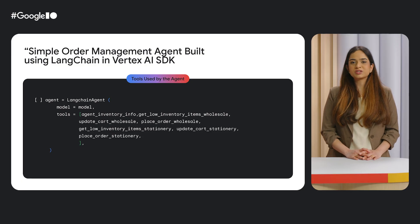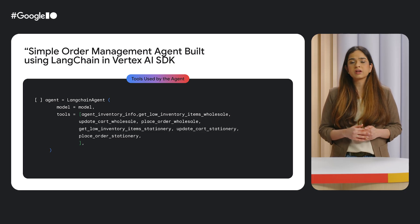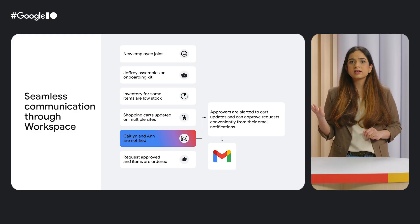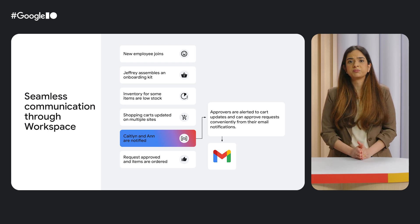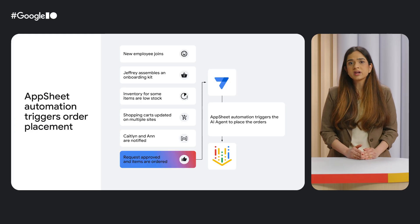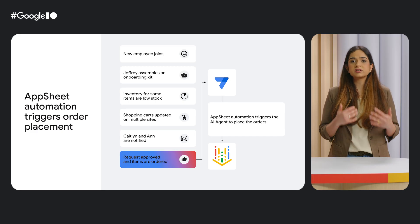Returning to our solution, we equip the agent with tools for updating carts, placing orders, and accessing inventory information. With the agent automatically updating carts, both Logistics Manager Caitlin and Store Manager Anne are promptly notified of low inventory levels through email. These notifications leverage dynamic emails, granting Anne the convenience of approving requests directly from her email. Once approved, AppSheet automation triggers Apps Script tasks to invoke the AI agent again to place the order and replenish the stock.